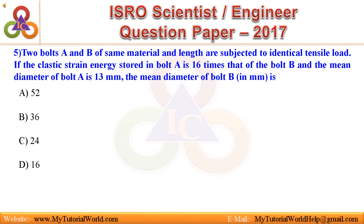Question 5. Two bolts A and B of same material and length are subjected to identical tensile load. If the elastic strain energy stored in bolt A is 16 times that of bolt B and the mean diameter of bolt A is 13 mm, the mean diameter of bolt B is: A. 52. B. 36. C. 24. D. 16. Answer is: 52.